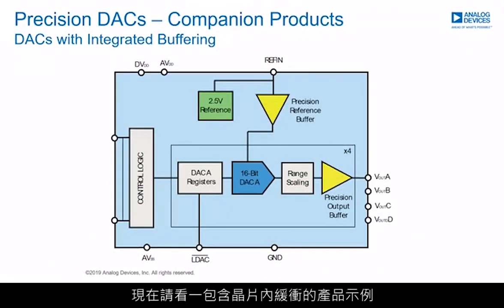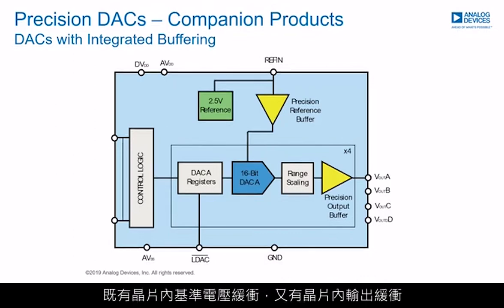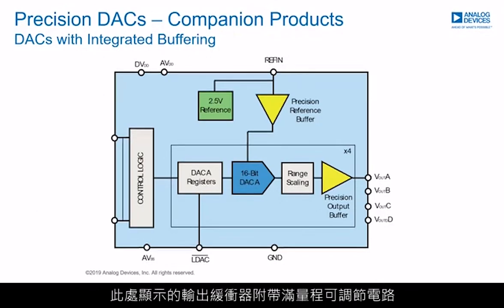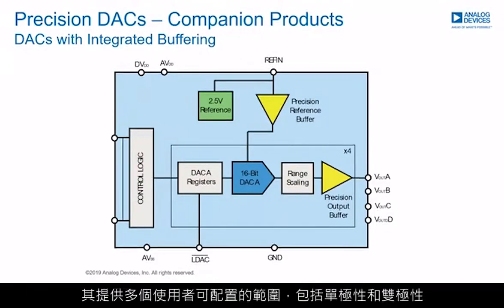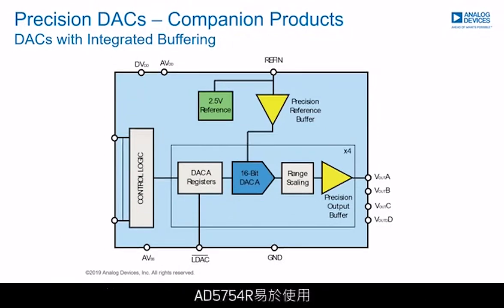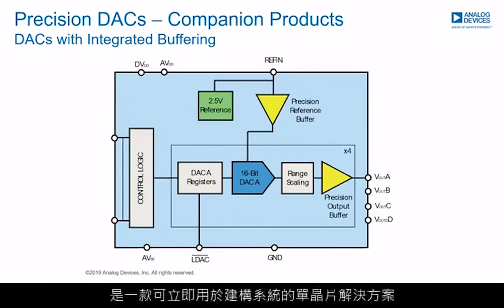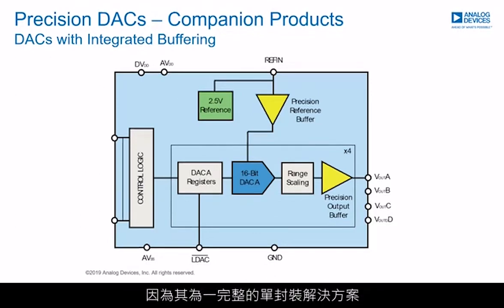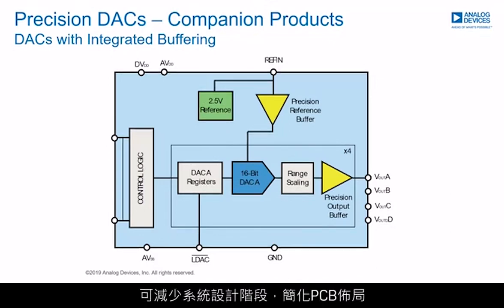We will now look at an example of a product that includes on-chip buffering. This is the block diagram for the AD5754R family of quad-channel DACs, which features both on-chip reference buffering and on-chip output buffering. The internal 2.5V reference is buffered on-chip, so no external buffering is needed. The output buffer is accompanied by range scaling circuitry, providing user-configurable ranges — both unipolar and bipolar. Designed for ease of use, the AD5754R is a system-ready single-chip solution that eliminates support circuitry including buffering and gain components required by discrete implementations, providing predictable accuracy and performance, reducing system design time, and simplifying PCB layout.